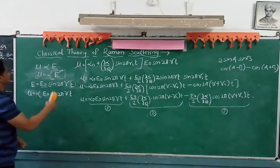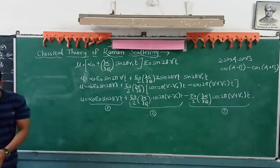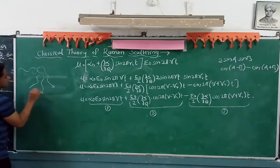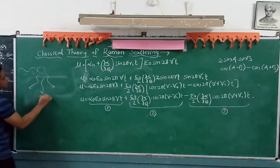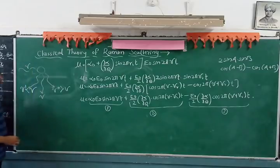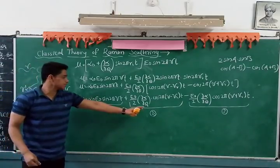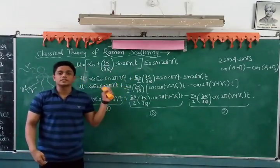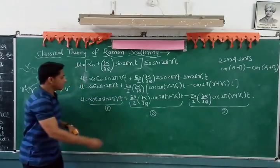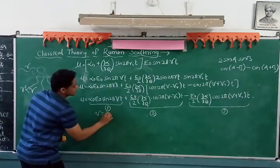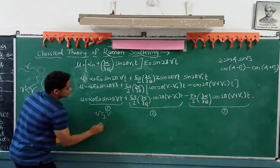Recall from the previous discussion: when we supply visible light to a molecule and observe the scattered light perpendicular to the incident light, we get lines with frequency equal to the incident frequency, some greater, and some smaller. From the first term — α₀E₀ sin(2πνt) — we supplied light of frequency ν and we get ν back. The supplied and scattered frequencies are the same, and this line is known as the Rayleigh line, due to elastic scattering.